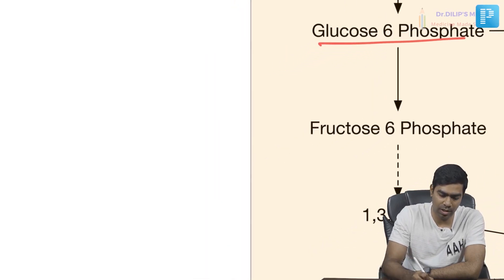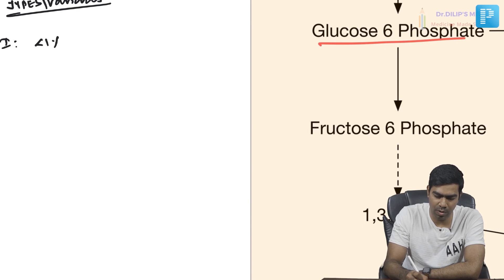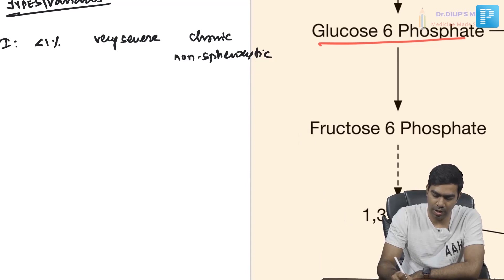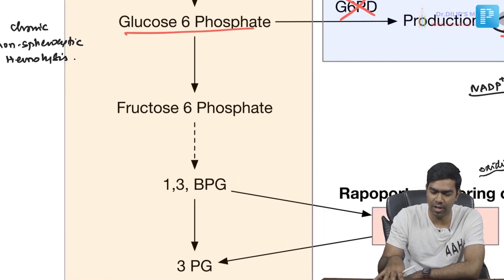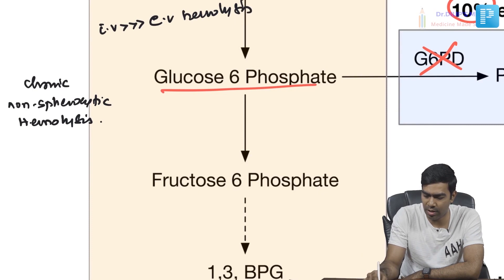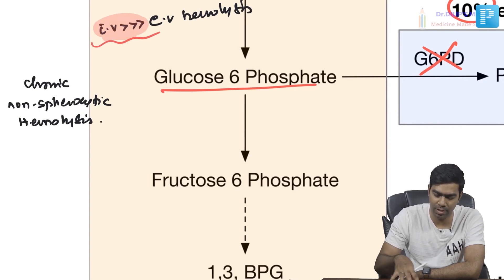G6PD deficiency has several classes based on enzyme levels. Class 1 has less than 1% enzyme activity — extremely severe, causing chronic non-spherocytic hemolytic anemia. G6PD deficiency typically does not produce spherocytes unlike autoimmune hemolytic anemia. The hemolysis in G6PD deficiency is characteristically intravascular rather than extravascular.